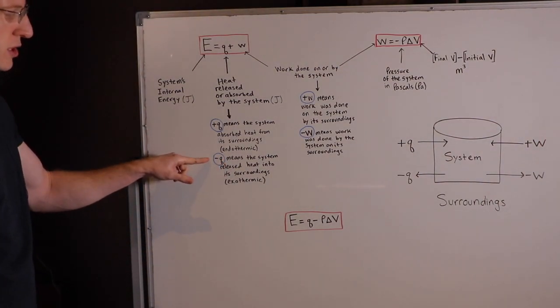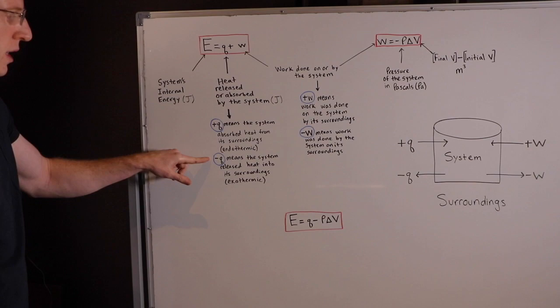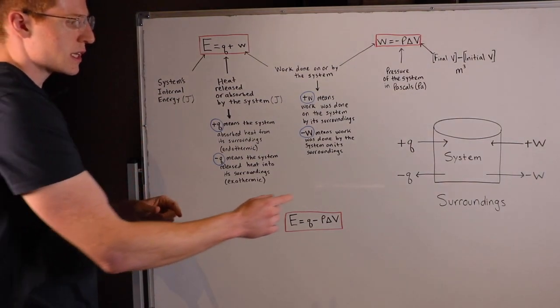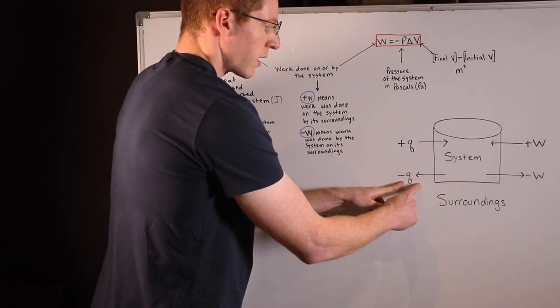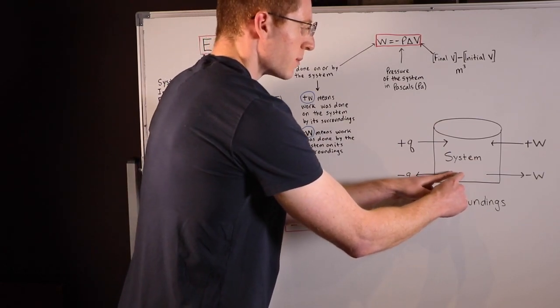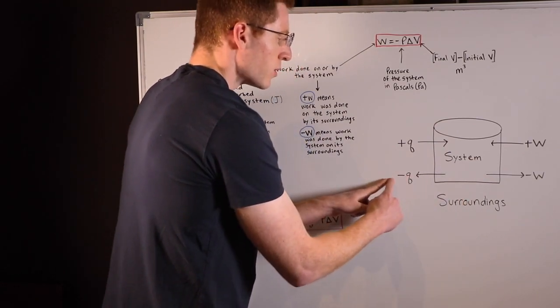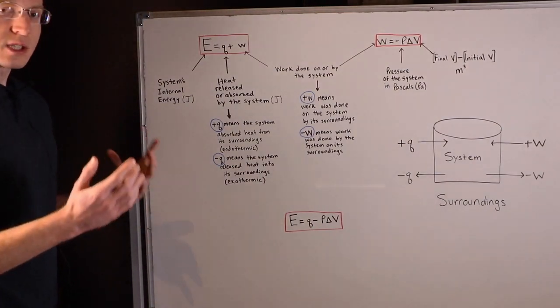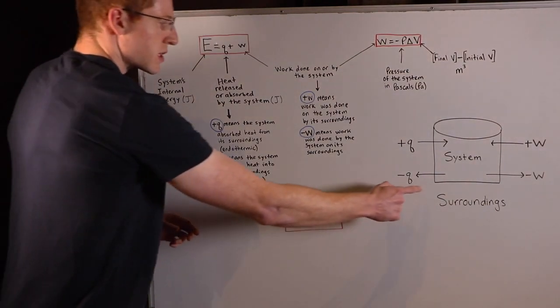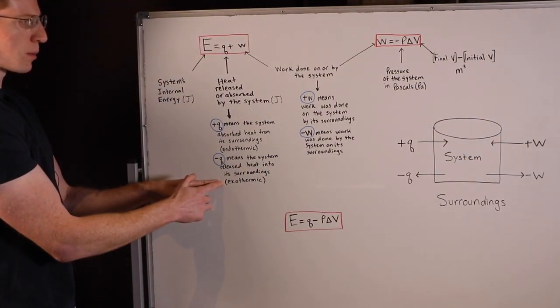Negative Q, conversely, means that the system released heat into its surroundings. So this is the opposite. This is illustrated right here, where heat went from inside the system out into its surroundings, and the special word we use to describe this process is an exothermic process.